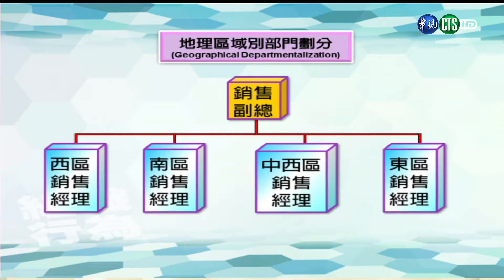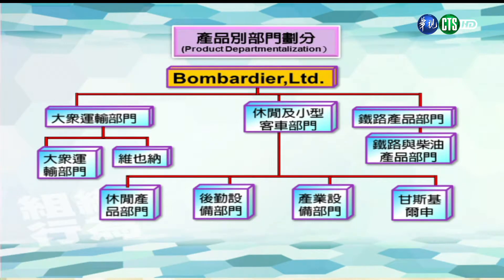地理区的部门划分是以地区的销售为划分对象，比如说最上面是一个销售的副总，按照区域包含西区、南区、中区、东区等，按照不同的区域来划分部门。另外像产品的部门划分，是按照不同产品的生产部门来划分。